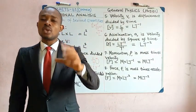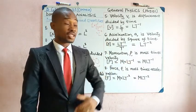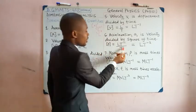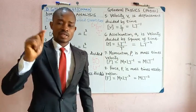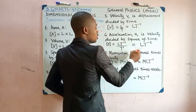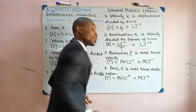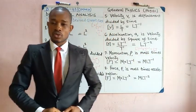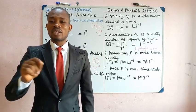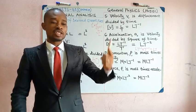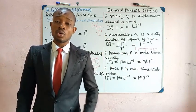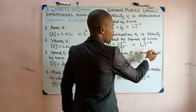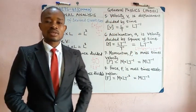Acceleration is velocity divided by time, so its dimension is the dimension of velocity divided by the dimension of time — LT⁻¹ divided by T¹. Taking T¹ from denominator to numerator changes its power from +1 to −1. You now have T⁻¹ multiplied by the T⁻¹ already present: add the powers, −1 + (−1) = −2. So the dimension of acceleration is LT⁻².